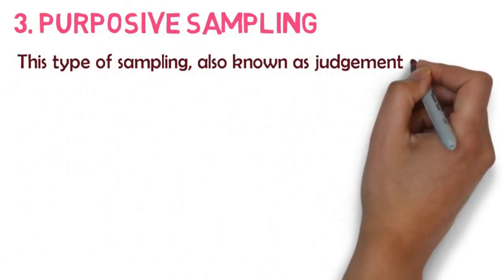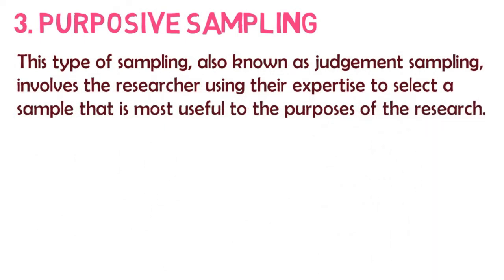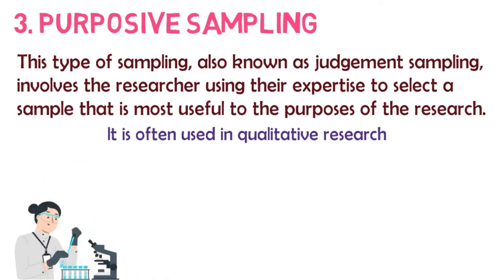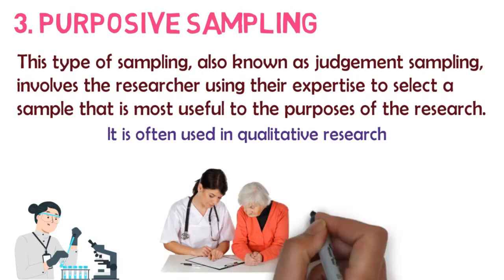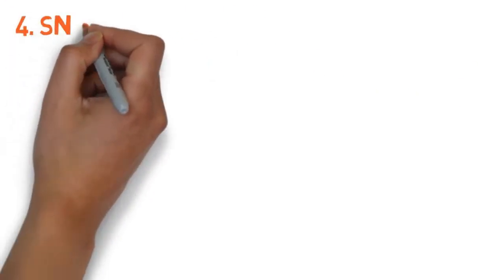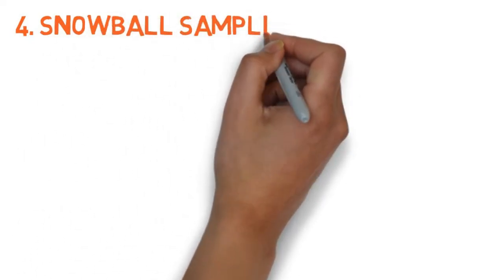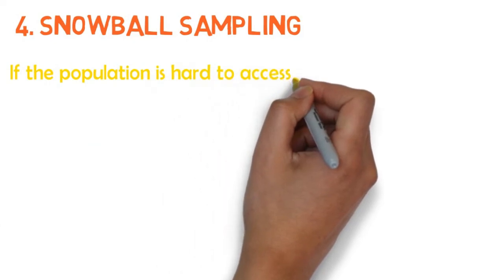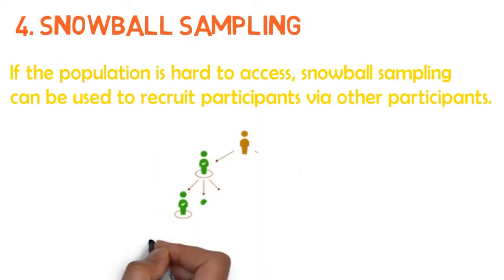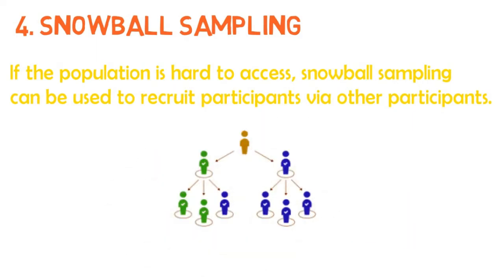Three, we have purposive sampling. This type of sampling, also known as judgment sampling, involves the researcher using their expertise to select a sample that is most useful to the purpose of the research. It is often used in qualitative research where the researcher wants to gain detailed knowledge about a specific phenomenon rather than make statistical inferences, or where the population is very small and specific. An effective purposive sample must have clear criteria and rationale for inclusion. And finally, under non-probability sampling, we have snowball sampling. If the population is hard to access, snowball sampling can be used to recruit participants via other participants. The number of people you have access to increases, or snowballs, as you get in contact with more people.